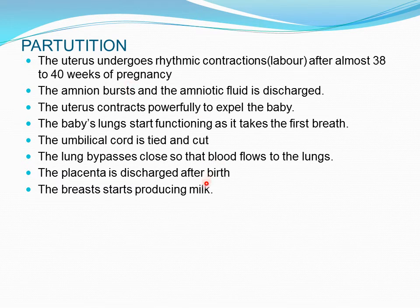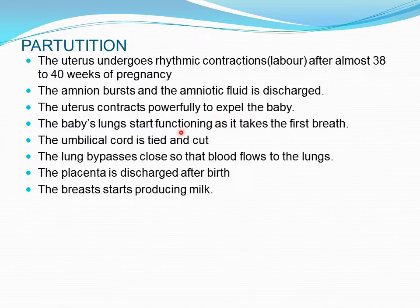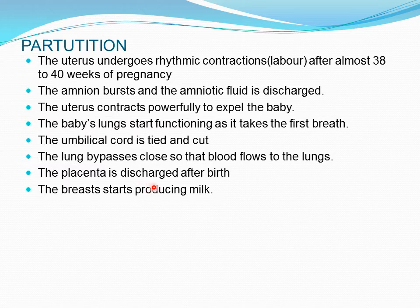To summarize: at 40 weeks of pregnancy, rhythmic contractions start, mainly due to prostaglandins. The amniotic fluid is discharged as the amnion bursts. The uterus contracts powerfully and expels the baby. The baby's lungs start functioning on its first breath, the umbilical cord is tied and cut, lung bypasses close, the placenta is discharged, and the breasts start producing milk as oxytocin rises.